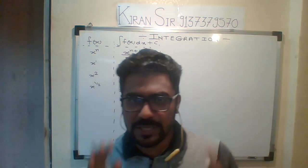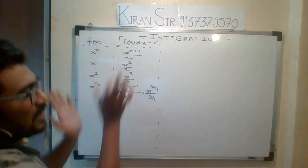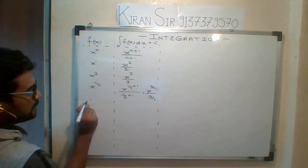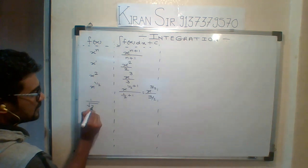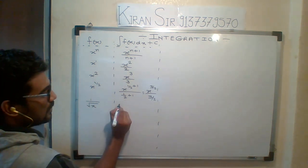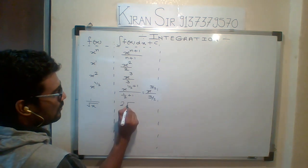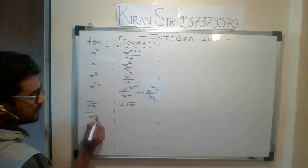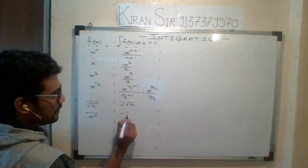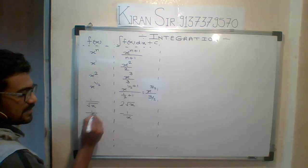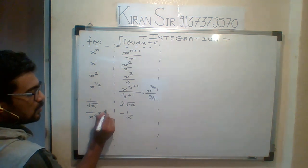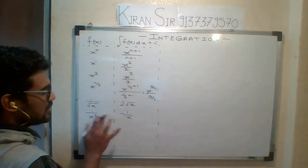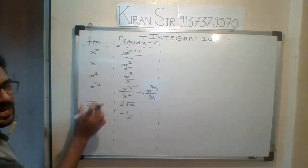You have to remember only the general formula: x raised to n plus 1 upon n plus 1. For example, integration of 1 upon root x — already derived — is 2 root x. And integration of 1 upon x squared, which you can treat as x raised to minus 2, gives minus 1 upon x. This is a standard function and you will know how to apply n plus 1.